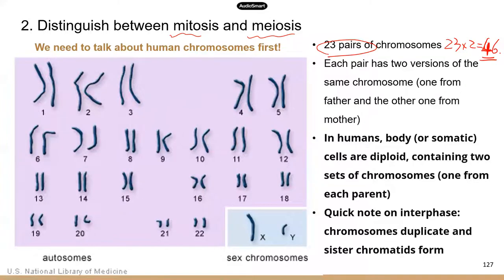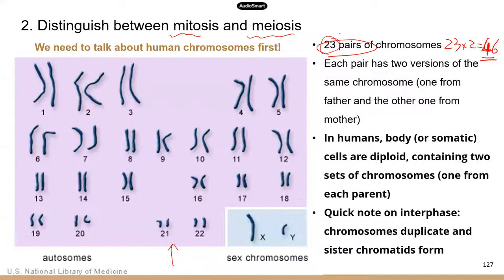When you look at this diagram of human chromosomes, notice that all these chromosomes come in pairs — that's why a lot of times when we describe the number of chromosomes, we use pairs. We say 23 pairs. That's why one of those famous genetic testing companies is called 23andMe — 23 is a very important number.